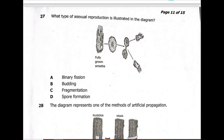Now we go to question 27: what type of asexual reproduction is illustrated in the diagram? Asexual reproduction involves one parent to produce offspring. The key is amoeba. What type of asexual reproduction is found in amoeba? The answer is C — binary fission. Budding is done with plants, while fragmentation and spore formation occur in organisms like Rhizopus.